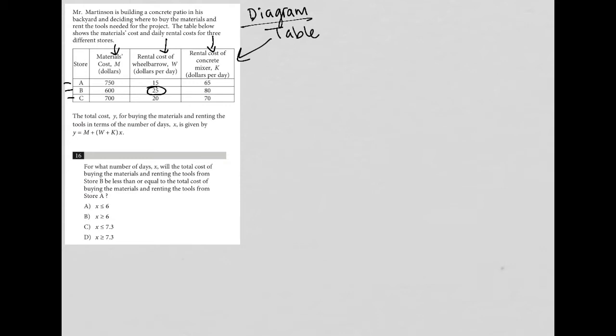So now let's read the information and get down into the question. Mr. Martinson is building a concrete patio in his backyard and deciding where to buy the materials and rent the tools needed for the project. The table shows the materials cost and daily rental costs for three different stores. The total cost Y for buying the materials and renting the tools in terms of the number of days X is given by this equation. So I always rewrite my equation. Y equals M plus parentheses W plus K and then X. I'm not a fan of having the X on the right hand side, so I'm going to just rewrite this because it really doesn't matter and I just like the way that looks a lot better.